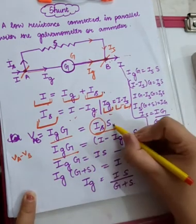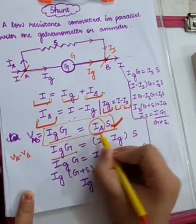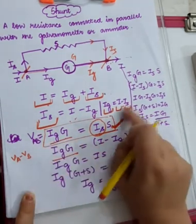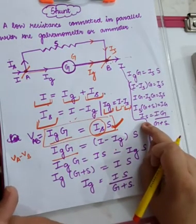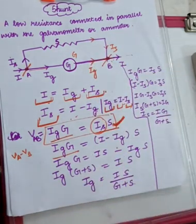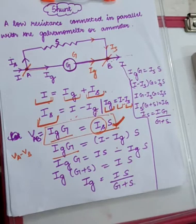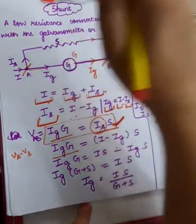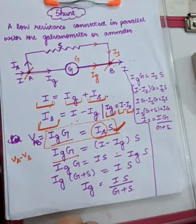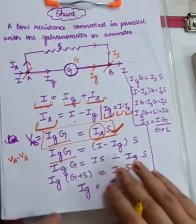From this central equation, substituting the value of IS as I minus IG, you can solve for IG. Similarly, keeping ISS constant and substituting IG, you can solve for IS. So you get the value of galvanometer current and the current flowing through the shunt. The uses of shunt are: first, to protect the galvanometer from very strong currents; second, to convert the galvanometer into an ammeter; and third, to increase the range of an ammeter.